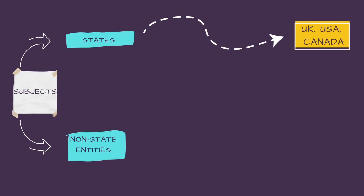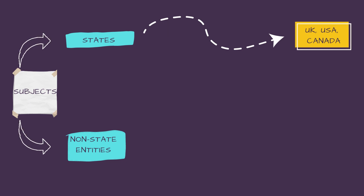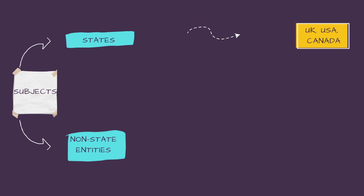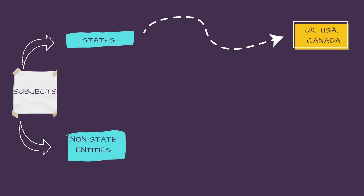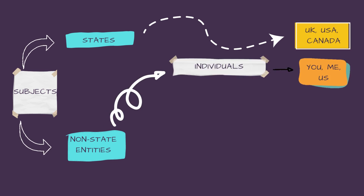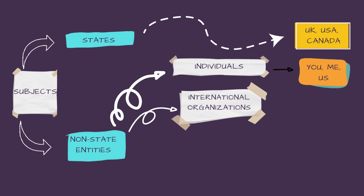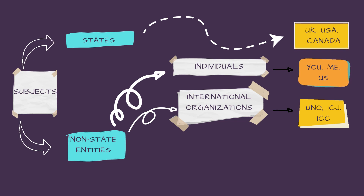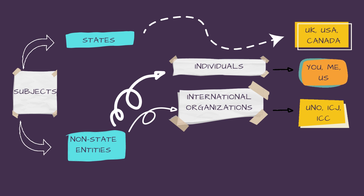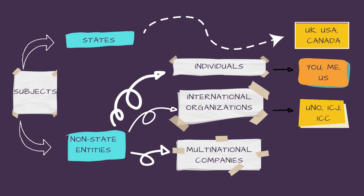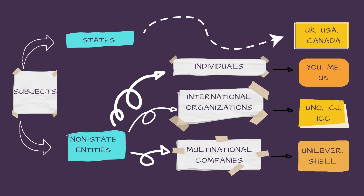States include countries like the UK, USA, and Canada. Non-state entities are further divided into three categories: first are individuals like you and me; second are international organizations like the United Nations, the International Court of Justice, and the International Cricket Council; and the third category is multinational companies such as Unilever and Shell.